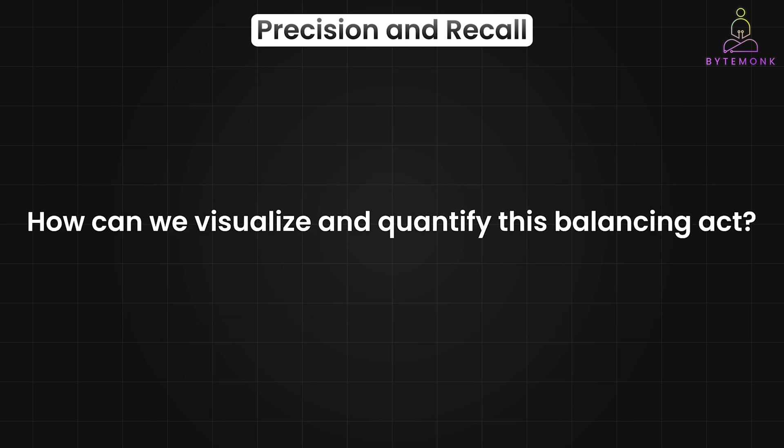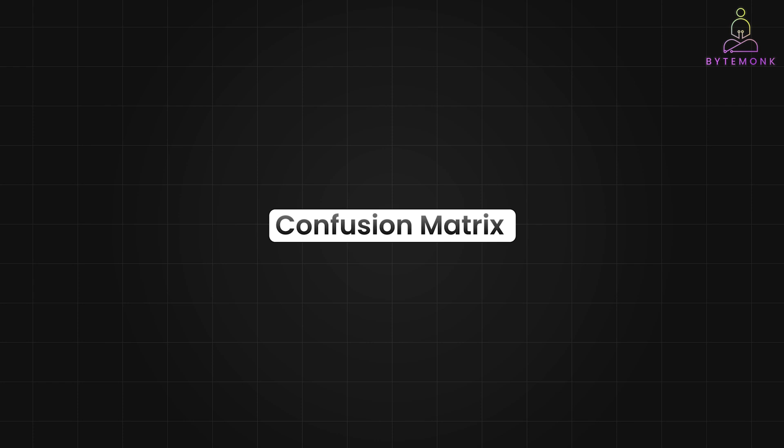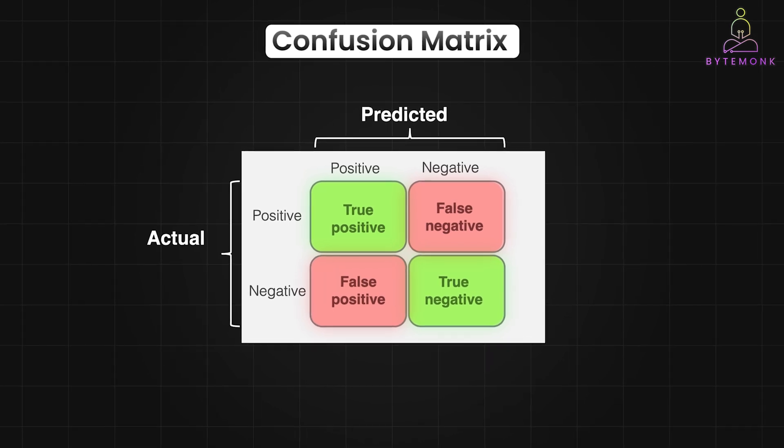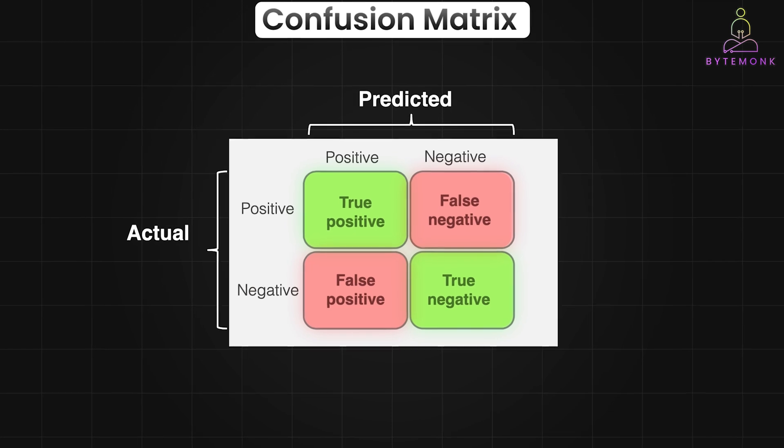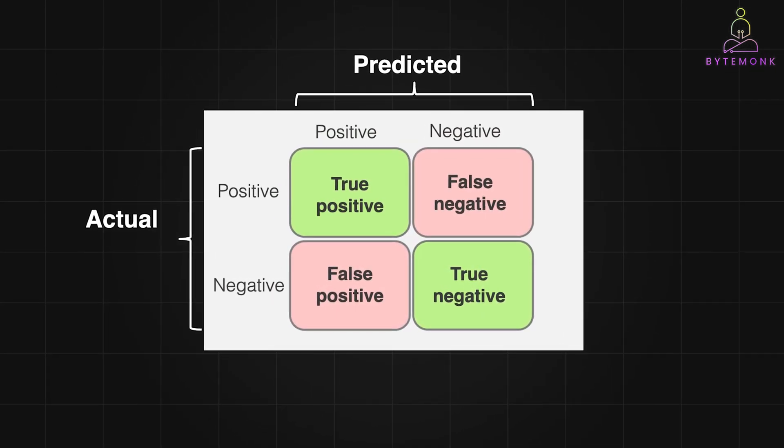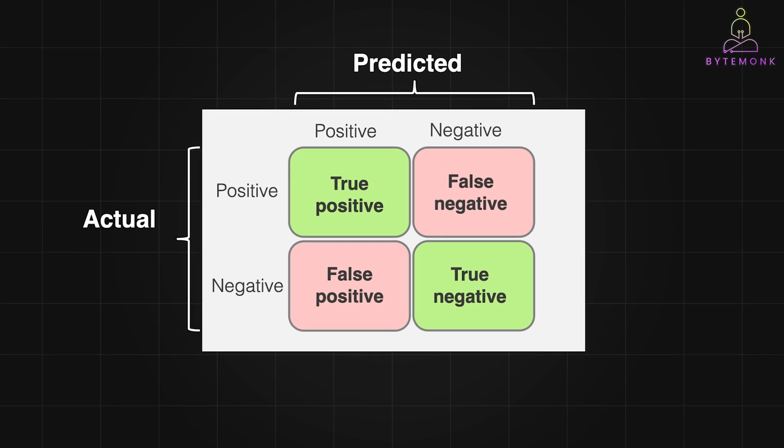Understanding this precision-recall trade-off is crucial, but it raises a question. How can you visualize and quantify this balancing act? Confusion matrix is an essential tool that provides a clear snapshot of your model's performance. The confusion matrix breaks down the results into four quadrants we discussed earlier: TP, TN, FP and FN. By examining these values, we gain deeper understanding of where our model excels and where it struggles. For binary classification, it's a two-by-two table with two rows and two columns. Rows typically show the actual classes and columns show the predicted classes.